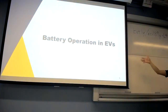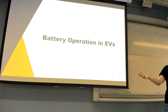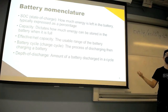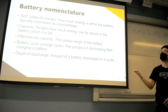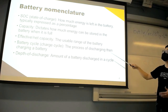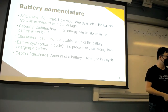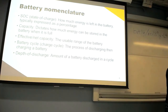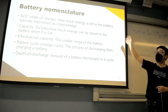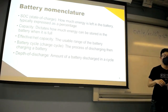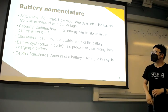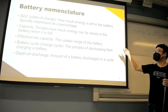Before we dive into battery operation in electric vehicles, we have to clarify some common nomenclature. The first term is state of charge — this is how much energy is left in the battery, typically expressed as a percentage. If you grab your smartphone or laptop, the battery icon telling you how full it is refers to the state of charge, which is related to the high energy state and low energy state of the battery.